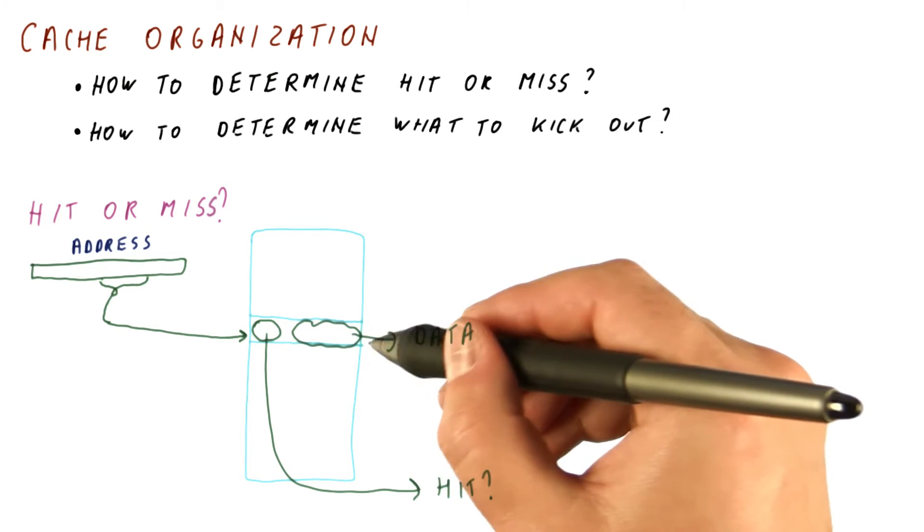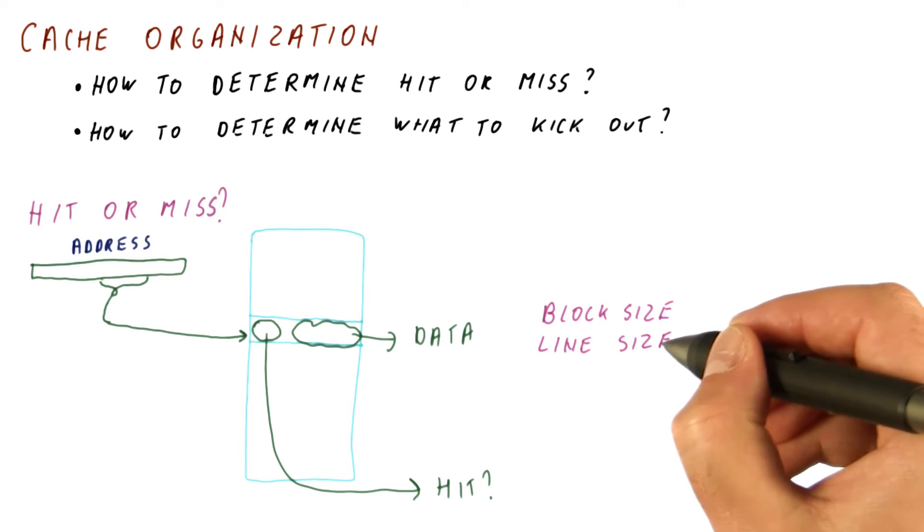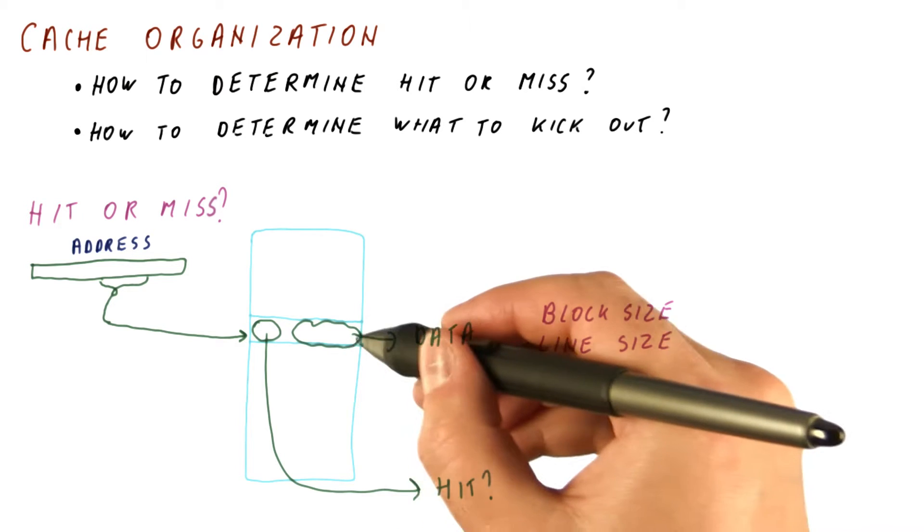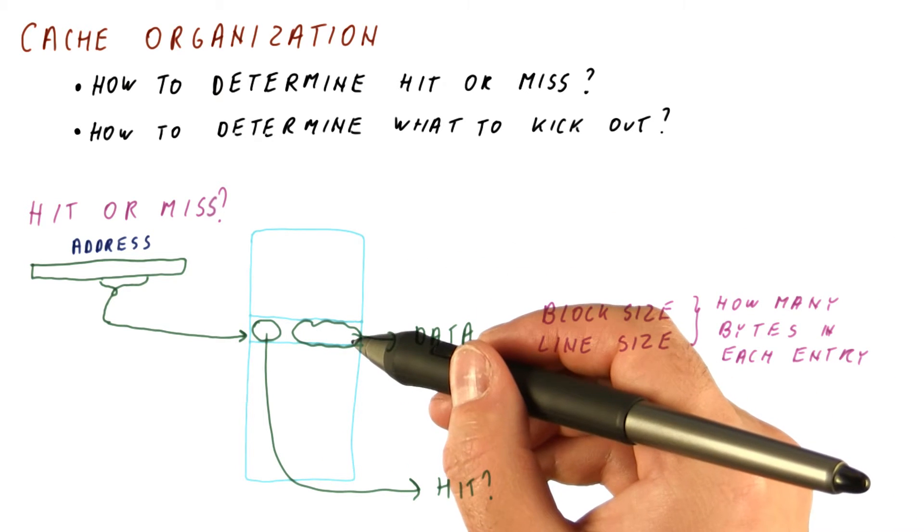How much data we have in each cache entry is called the block size, or the line size, because the entry in the cache is also called a line. And they tell us how many bytes are in each of these entries.